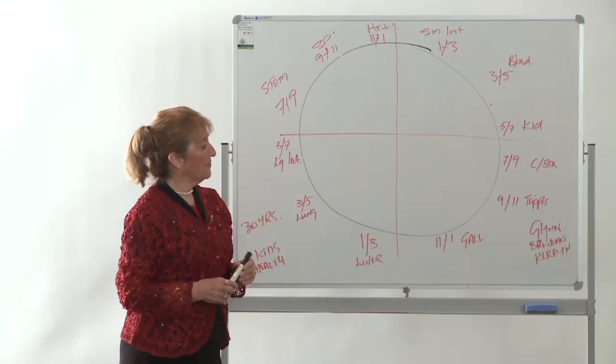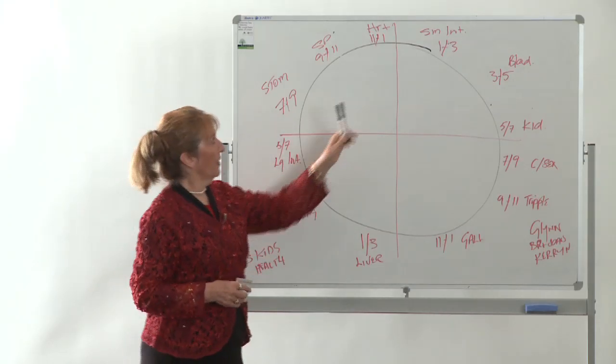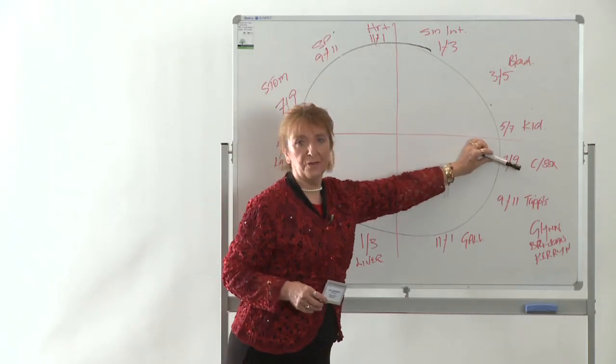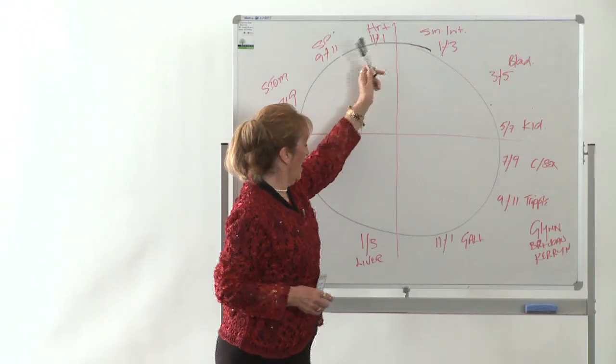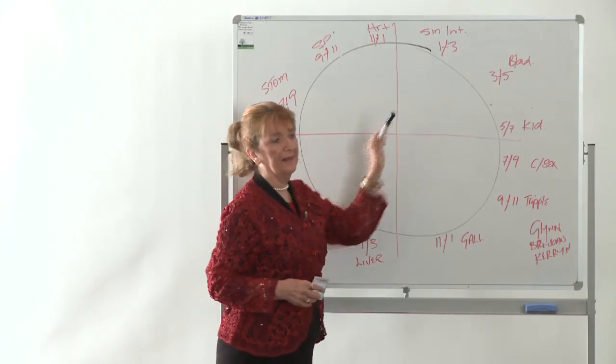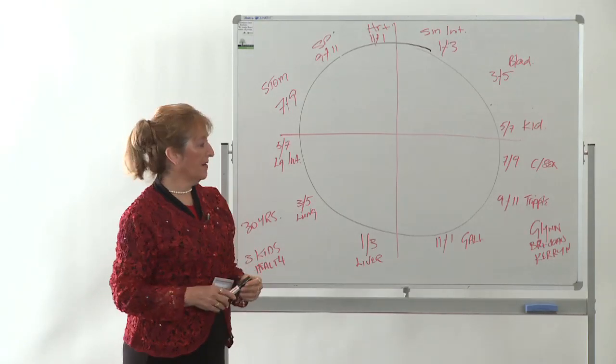The body clock then moves into an area where it will work across the clock as well. So the stomach actually works with your circulation. Your heart actually works with your gallbladder and it keeps crossing the clock to give you the benefit of the day and also the benefit of the night.